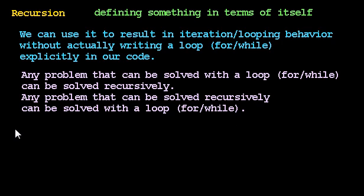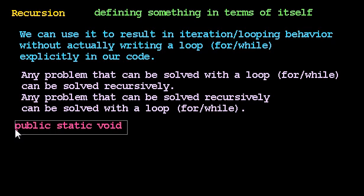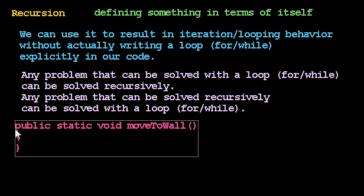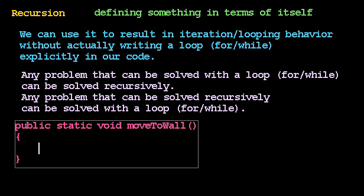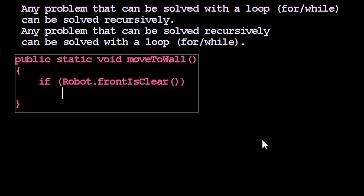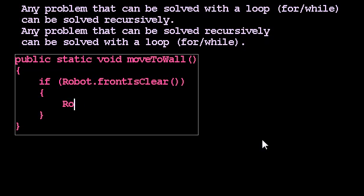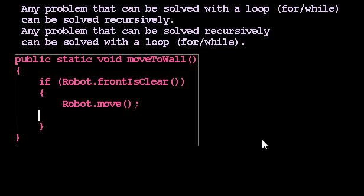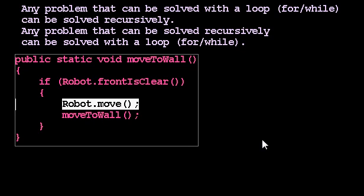Let's take a look at that method we wrote earlier. We wrote a method called moveToWall, and its job was to move the robot to a wall. The way we did that is: if the front was clear, then it was safe to move, so we moved. And then rather than writing a loop to repeatedly move as long as the front is clear, we simply said: having moved, the work that remains is now to move to the wall. That's reasonable because we've taken a step, so we're closer to the wall — we've made some progress.